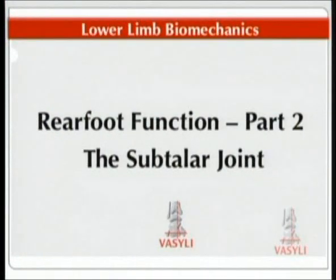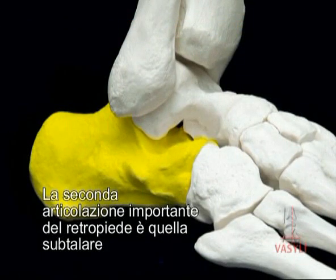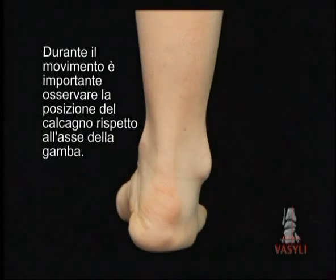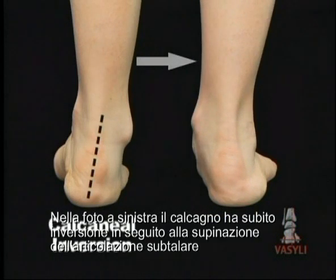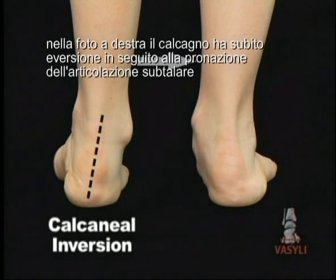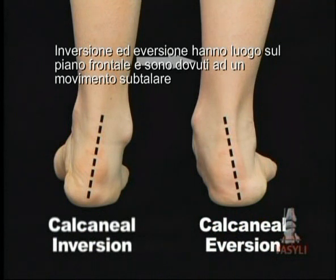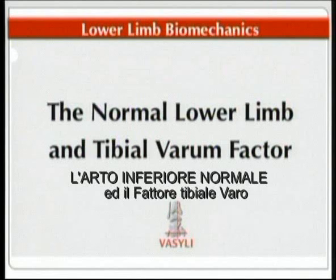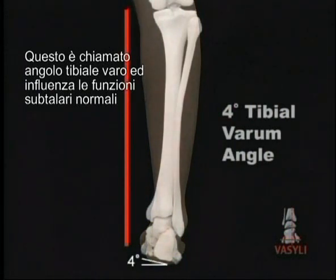Rear foot function part 2: the subtalar joint. The second major joint of concern is the subtalar joint. The terms pronation and supination are used to describe the motions taking place at the subtalar joint. In the photo on the left the calcaneus is inverting, which indicates that the subtalar joint is supinating. In the photo on the right the calcaneus is everting, which indicates that the subtalar joint is pronating. Inversion and eversion take place in the frontal plane and indicate only one component of subtalar joint motion. The normal lower limb is inverted approximately four degrees from the vertical, called tibial varum, which influences normal subtalar joint function and varies between individuals.